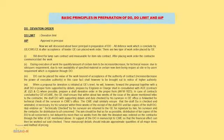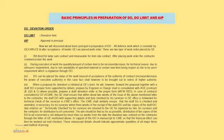All defense work which is concluded by GE and CW's Chief Engineer, and after acceptance of tender, GE can place a work order. There are two types of work order placed by GE: bill direct for lump sum contract and measurable for item rate contract.